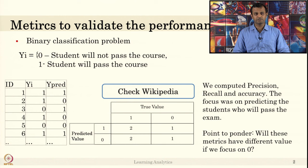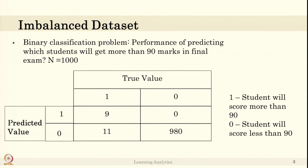Just type precision, recall, accuracy, Wikipedia in Google, you will get the page. Let us check the next problem in classification.